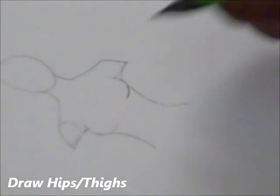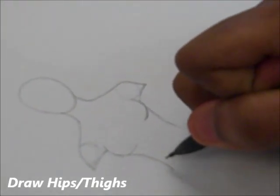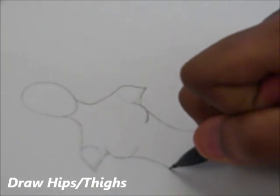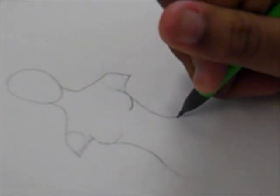Now that you have formed her waist, we're going to form it into her hips as well as her thighs. You'll do this by going downward but curving it, giving her shape.